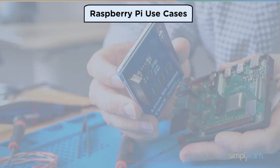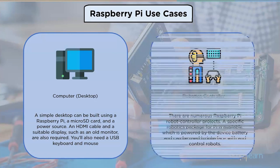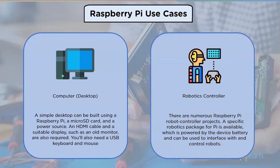Raspberry Pi use cases: As a computer desktop, a simple desktop can be built using a Raspberry Pi, a micro SD card, a power source, an HDMI cable, a suitable display such as an old monitor, a USB keyboard, and a mouse. As a robotics controller, there are numerous Raspberry Pi robot controller projects — a specific robotics package for Pi is available, powered by the device battery, and can be used to interface with and control robots.